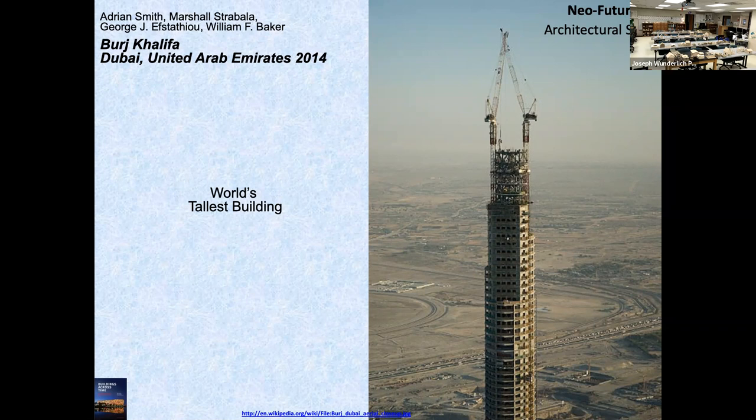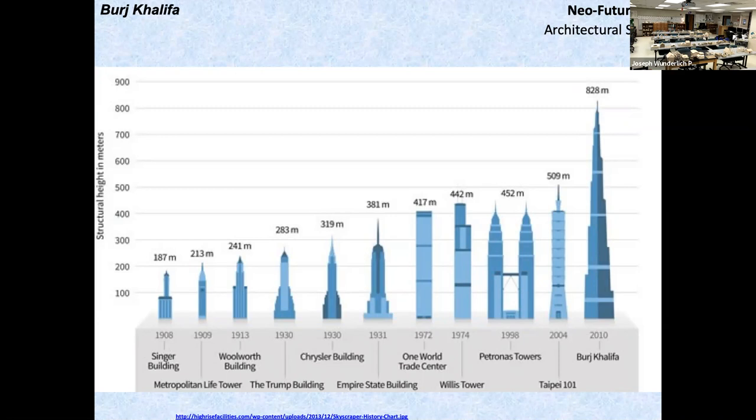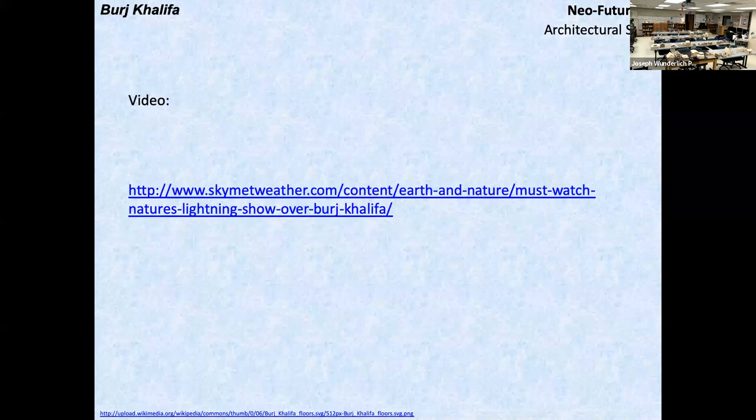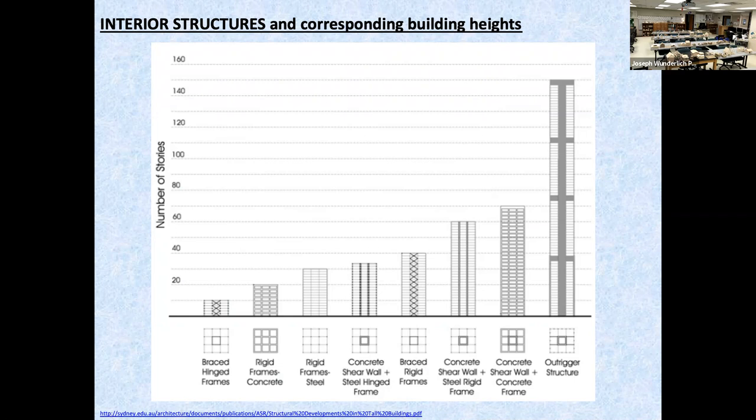This is the world's tallest building — very tall. You can see how it's sectioned off into areas for multi-use. Take a look at that video — you can see lightning striking it. Interior structure and corresponding building height show the different ways you can do buildings. Imagine the space you're creating with each, plus the varying costs and methodologies.